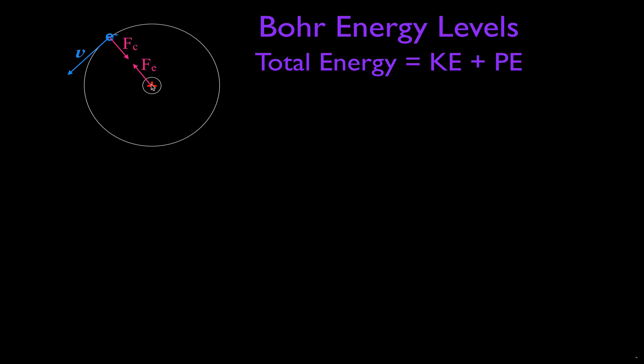We have a positively charged nucleus and a single electron traveling around in a circular path with a velocity pointing in that direction. There is an electric force and a centripetal force acting between the positively charged nucleus and the negatively charged electron. Those two forces are equal in magnitude but opposite in direction, and we can use that convenient fact to derive the equation for the energy levels.